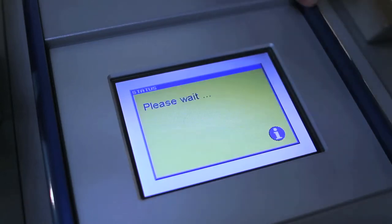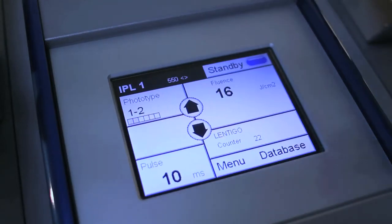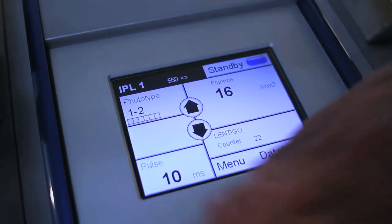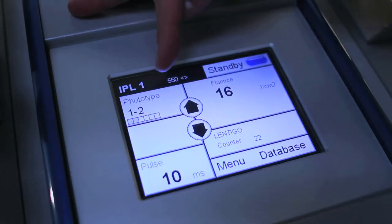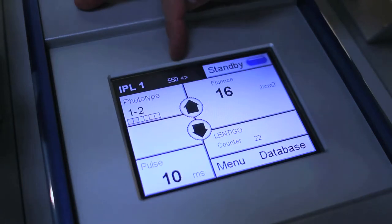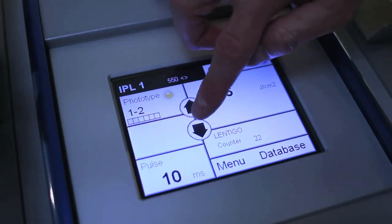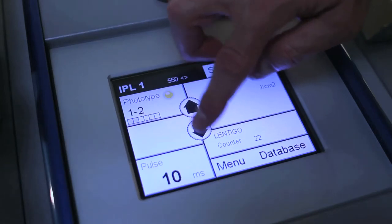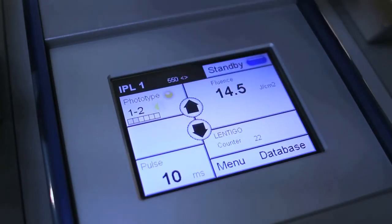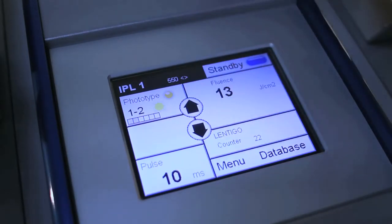It asks you to verify. Now, with the advanced menu, you can adjust your pulse duration, and it's going to tell you you're using handpiece number one with a 550 small filter. It's going to give you some presets based on what skin type you type in. Depending on your skin type, it's going to adjust your fluence, but with the advanced, you're able to adjust your pulse duration as well.